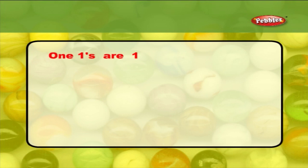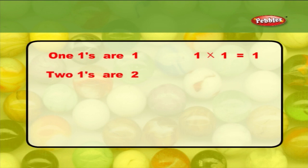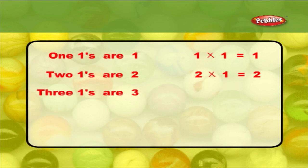One ones are one. One into one is equal to one. Two ones are two. Two into one is equal to two. Three ones are three. Three into one is equal to three.